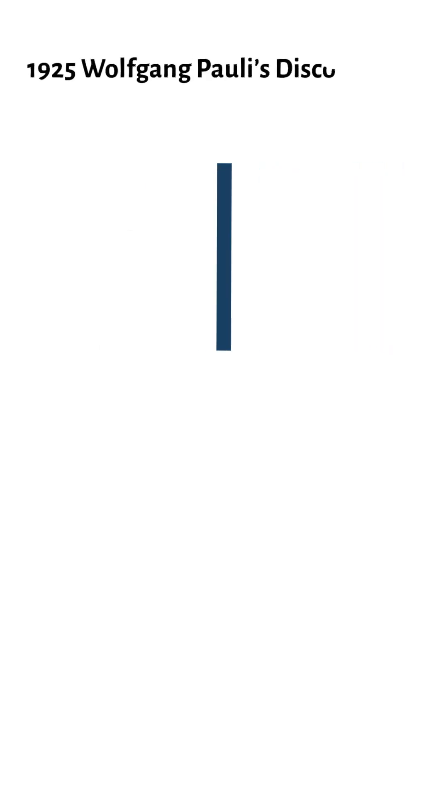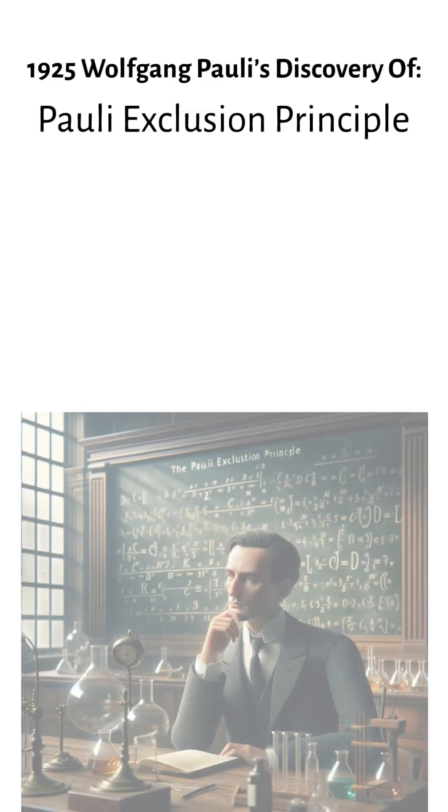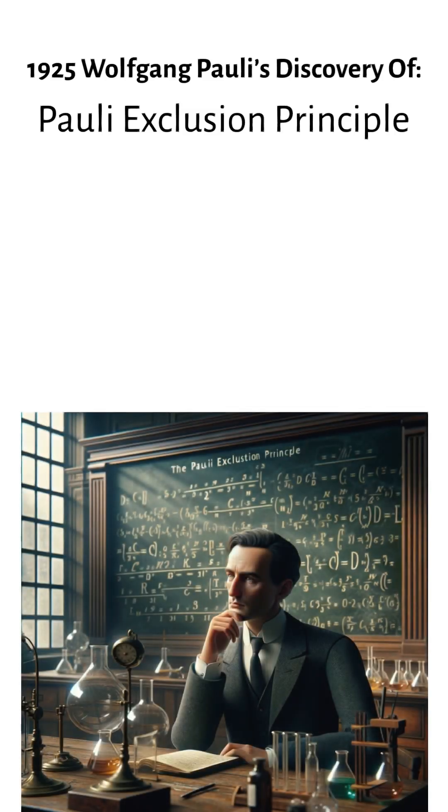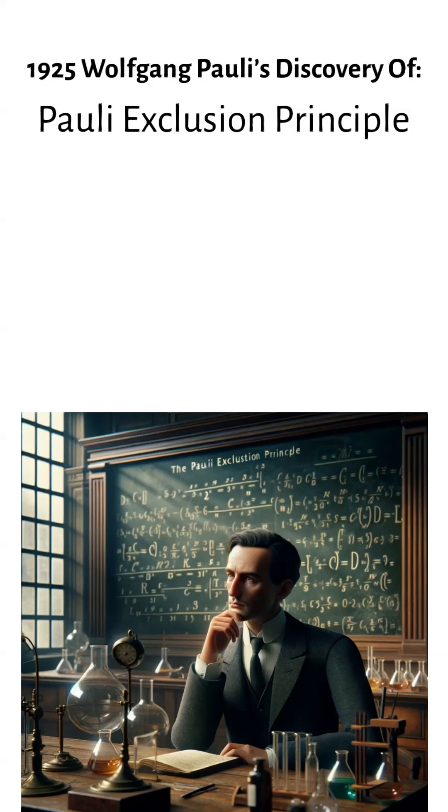In 1925, Wolfgang Pauli's discovery of the Pauli Exclusion Principle was the final key to physicists being able to accurately represent electrons in their prospective orbitals in an electron shell.